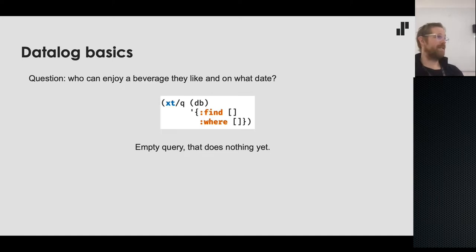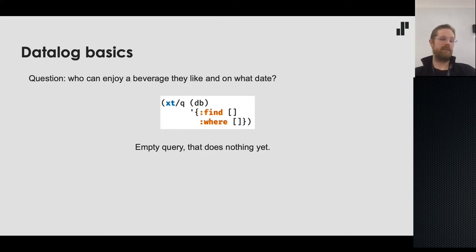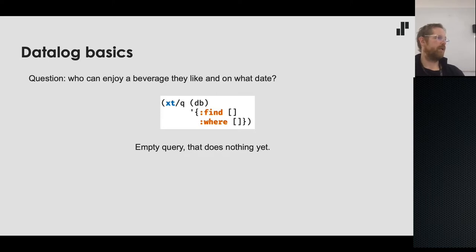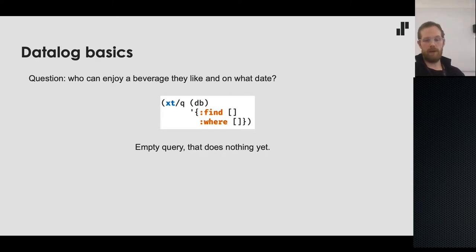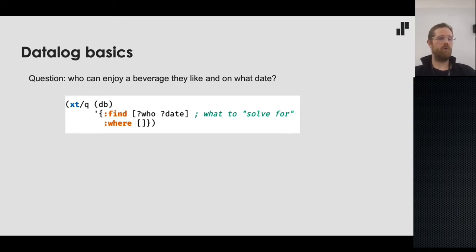Let's start with the basics. The question we want to answer is: who can enjoy a beverage they like, and on what date? Here's the boilerplate that does the query: we have the `xt/q` function, a `db` function that gives us a database value, and a quoted data structure that is the query itself — we're passing data structures, not strings. The first thing is to determine what we want to solve for: who and date.